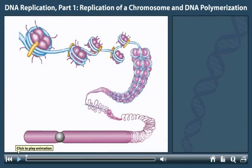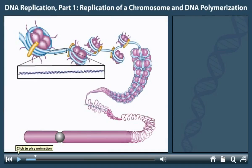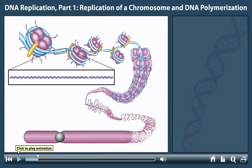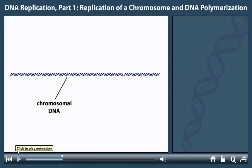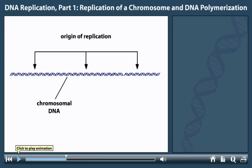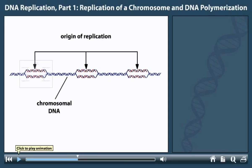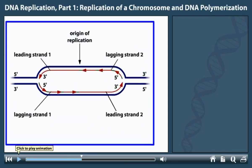A eukaryotic chromosome contains a long linear molecule of double-stranded DNA. This DNA is tightly coiled within the chromosome but unravels during interphase when DNA replication occurs. A eukaryotic chromosome contains multiple origins of replication.